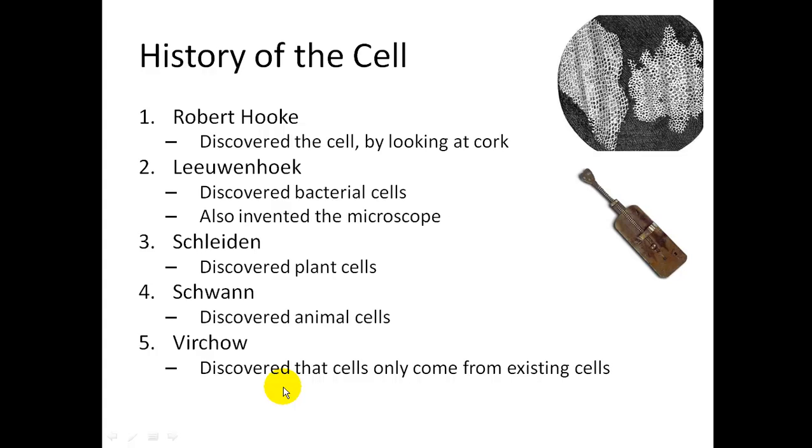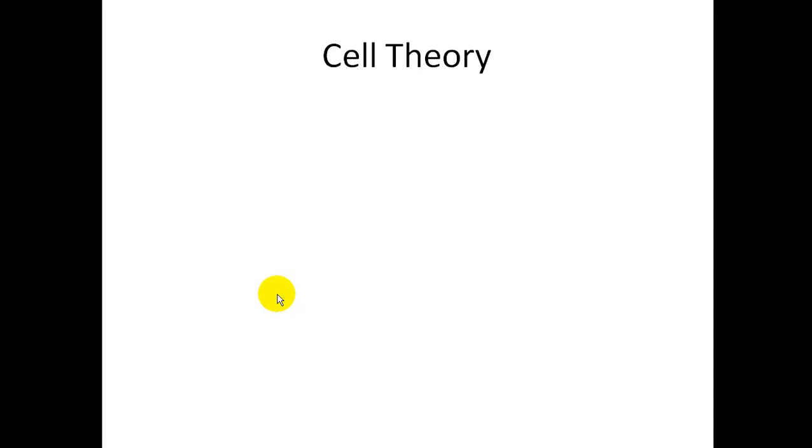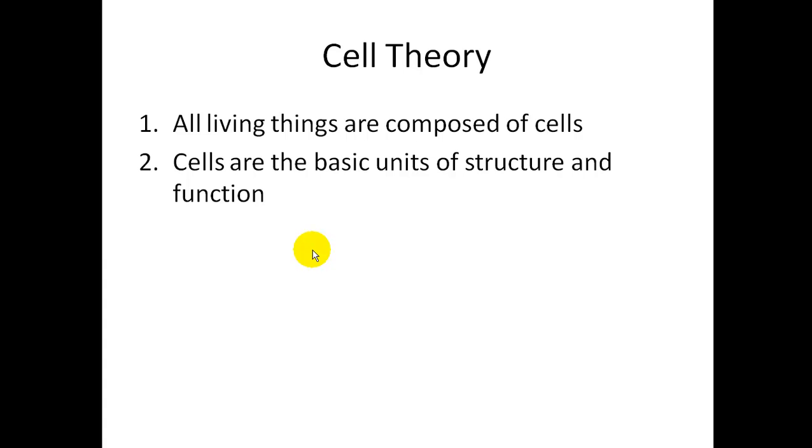With the last three, they actually lived at the same time and in the same area, and they came up with the cell theory. You should be familiar with the steps for the cell theory. Step number one, all living things are composed of cells. Cells are the basic units of structure and function. And number three, cells are produced only from other living cells. So these three parts are to the cell theory.